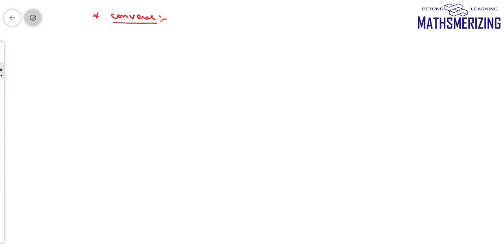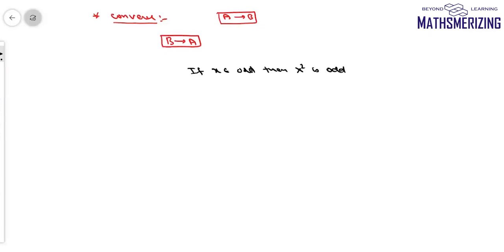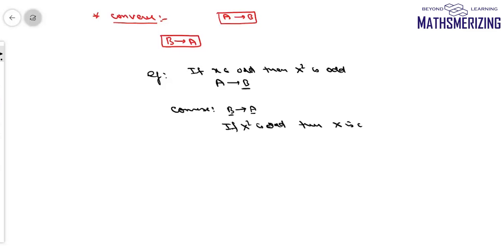Now the converse of A→B: if the statement is 'if A then B,' then the converse is 'if B then A' (B→A). For example, suppose A→B is 'if x is odd, then x² is odd.' The converse of this statement is B→A, which is 'if x² is odd, then x is odd.'